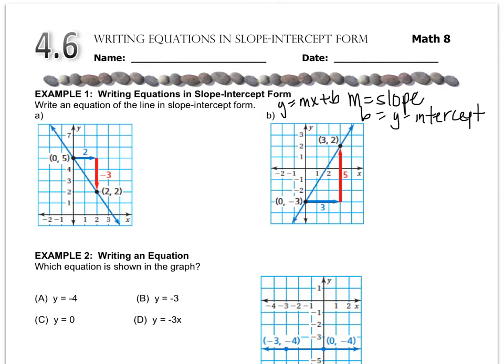In example letter a, we have to write an equation in slope-intercept form. So the m, we have to find the slope, which in this case they're telling us is negative 3 over 2.